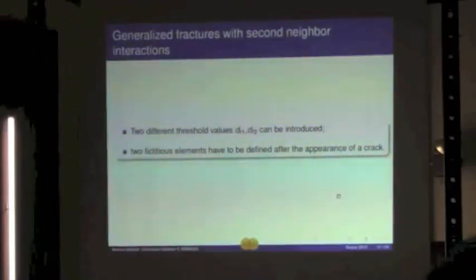Finally we generalized this concept of fracture for a first-neighbor interaction for the second-neighbor interaction. So in order to do this, we had to introduce two thresholds for the two types of interaction, and of course a second fictitious boundary to give the boundary condition and the stability to the swarm has to be introduced.